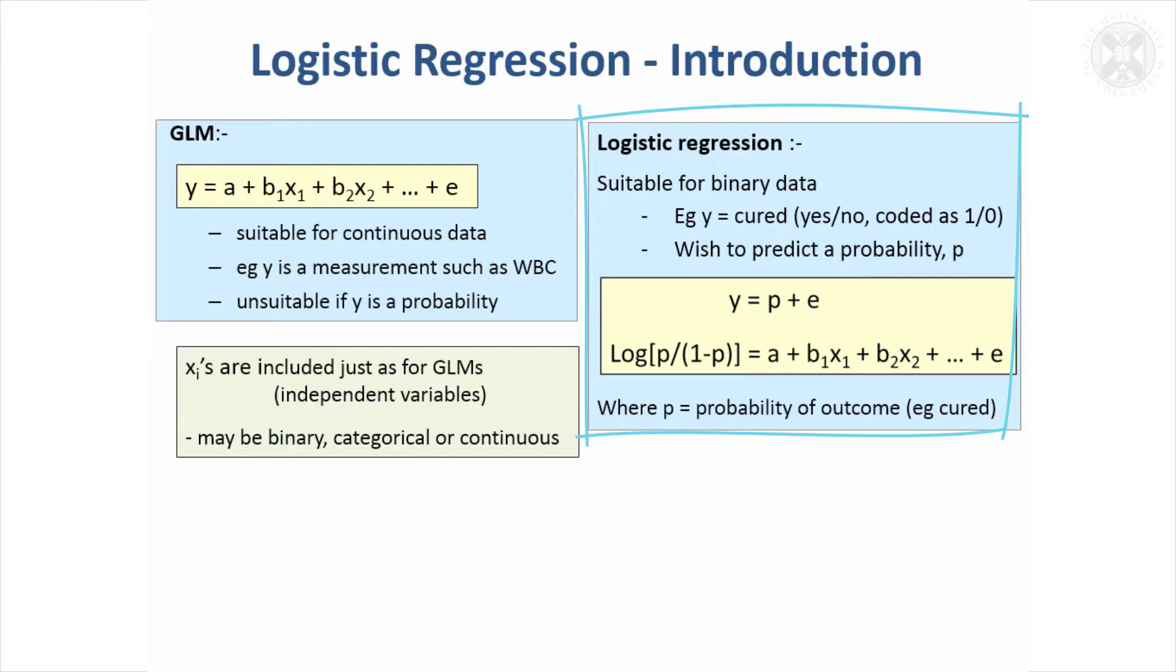In logistic regression you're actually trying to predict a probability rather than a continuous measurement that you were predicting in a general linear model. So this y is your observations which will have a value of 0 or 1, something happens or it doesn't, so you can code them as 0 or 1.